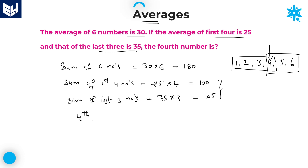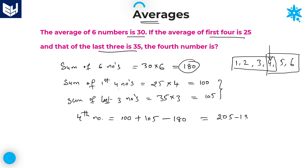The fourth number is equal to sum of first 4, that is 100, plus sum of last 3, that is 105, minus sum of 6 numbers, which is 180. That equals 25. The value of the fourth number is 25 — that is the required answer.